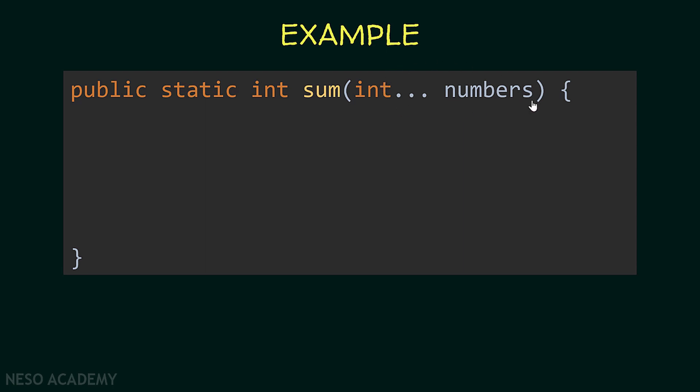So what happens here? Now we are able to pass a variable number of arguments to the method sum. When we pass these arguments to the method, Java will create an array called numbers, and the arguments will be the elements of this array. So this identifier is the name of an array, and we can use it just like an array inside this method. All we need to do is get the sum of the elements inside this array and return it.